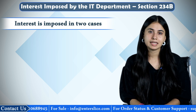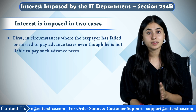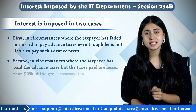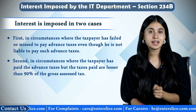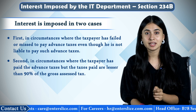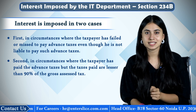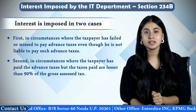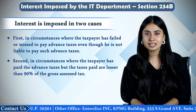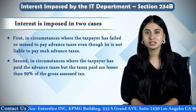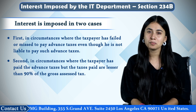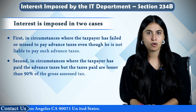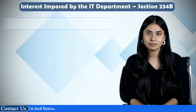This interest is imposed in two cases. First, in circumstances where the taxpayer has failed or missed to pay advance taxes even though they are liable to pay such advance taxes. Or second, in circumstances where the taxpayer has paid the advance taxes, but the taxes paid are less than 90% of the gross assessed tax. Therefore, as per Section 208 of the Indian Income Tax Act, advance tax should be paid when the estimated tax liability during the financial year is rupees 10,000 or more. This interest is calculated at the simple rate of 1% per month or fraction of a month.